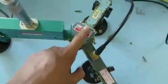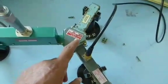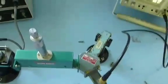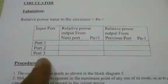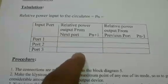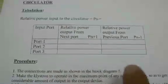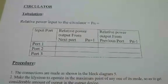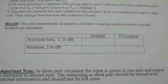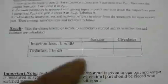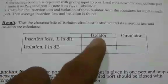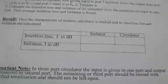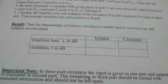Next, we give the input to port three and see the outputs at port one and then port two by interchanging the connections, noting down the outputs as usual. With this, the circulator experiment is complete. We have found the various values, which are substituted into the equations to find the insertion loss and isolation for both the isolator and the circulator, and these results are recorded.